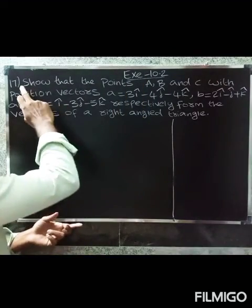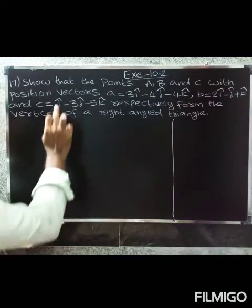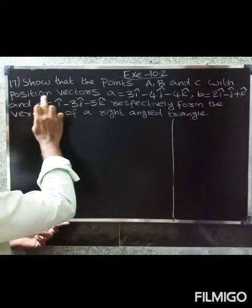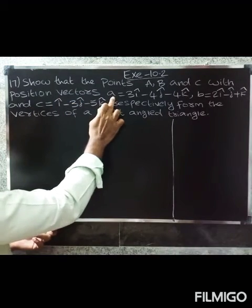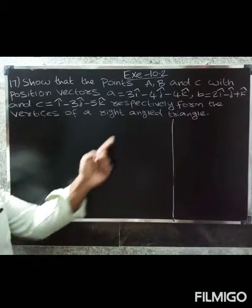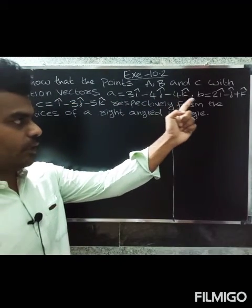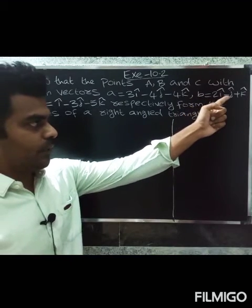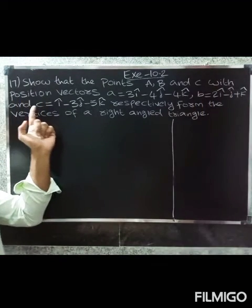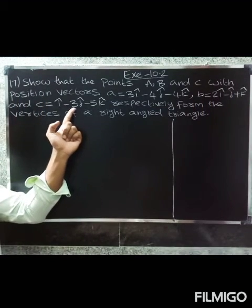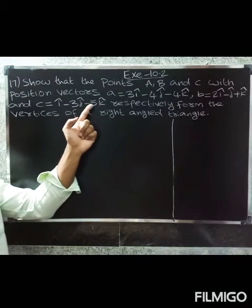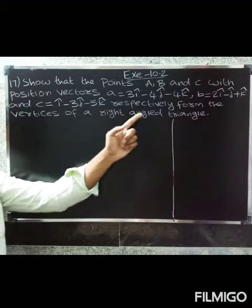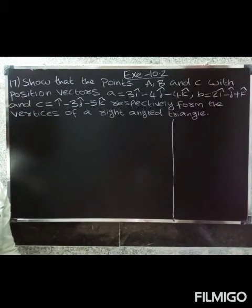Question: Show that the points A, B, and C with position vectors a equal to 3i - 4j - 4k, b equal to 2i - j + k, and c equal to i - 3j - 5k respectively form the vertices of a right-angle triangle.